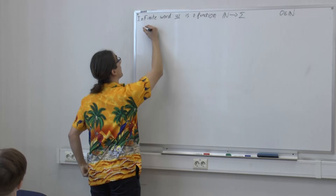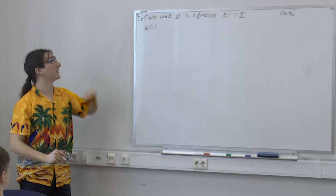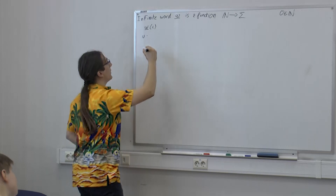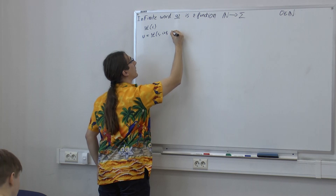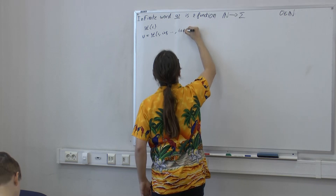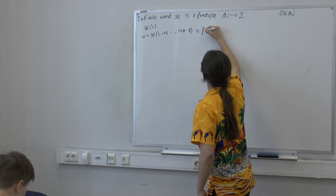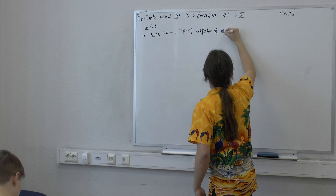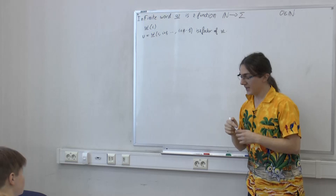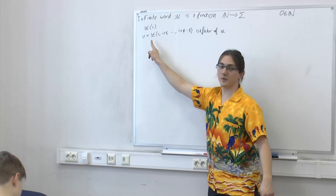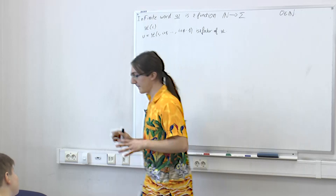And if I want to talk about a factor, I can write i, i+1, ..., i+n-1. A factor is still the same thing as before, just inside an infinite word. The important thing is that a factor is always finite. If I say u is a factor of w, u is always a finite word — it has a length, here the length is n.